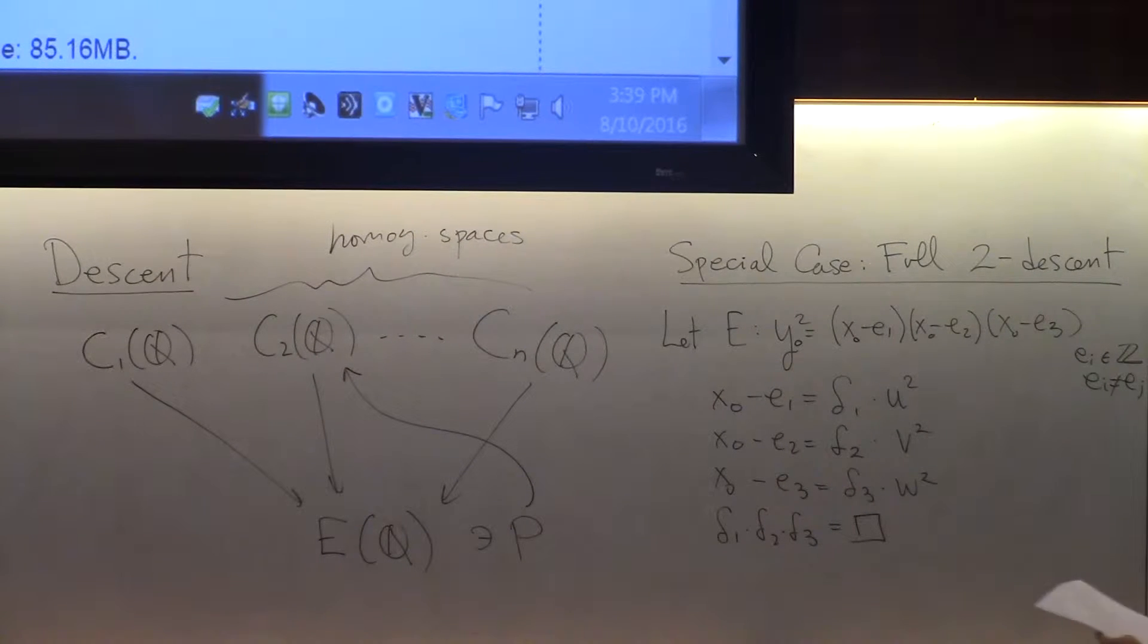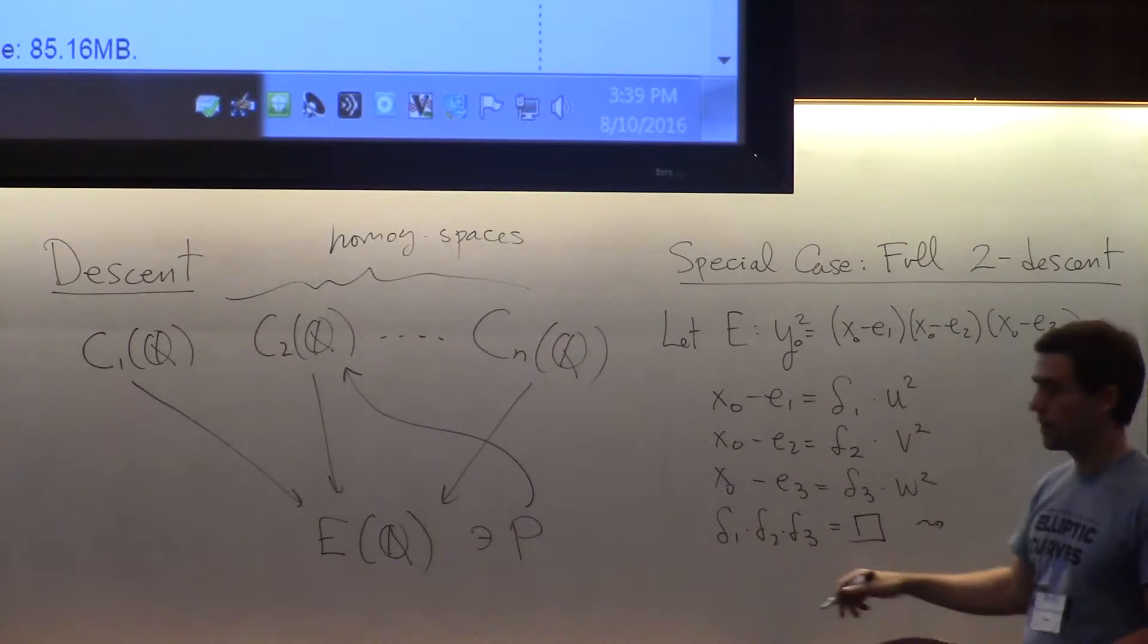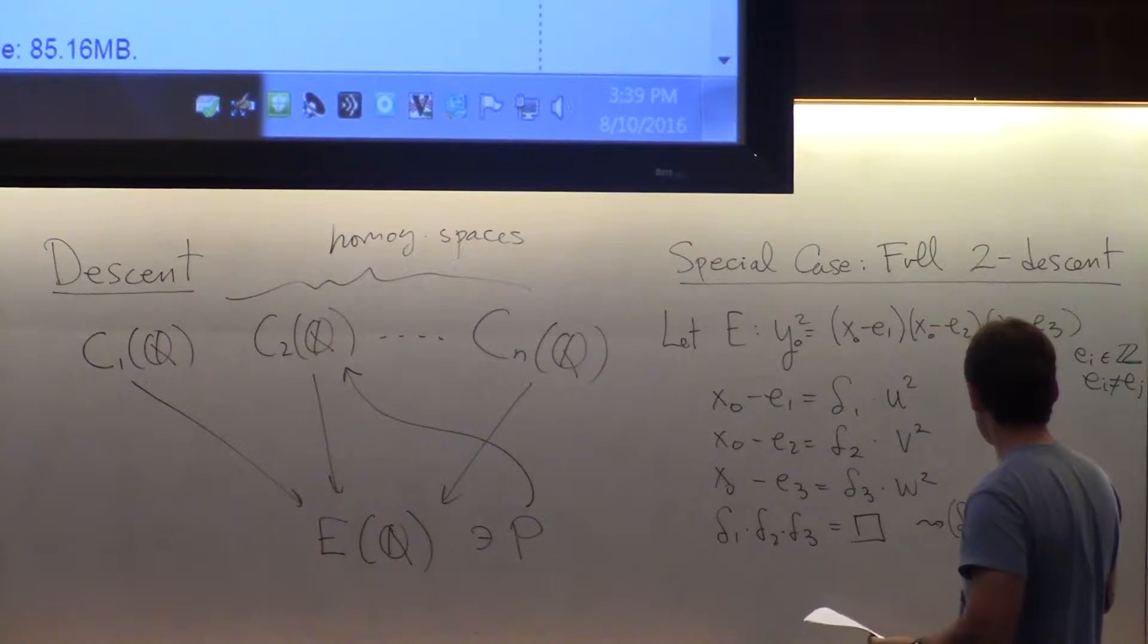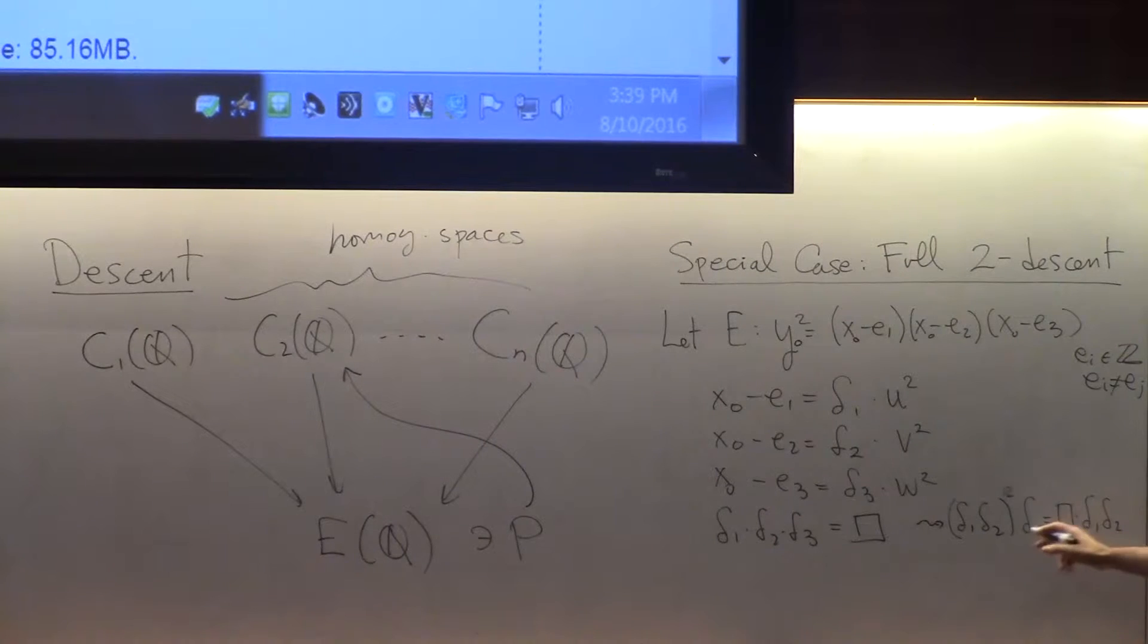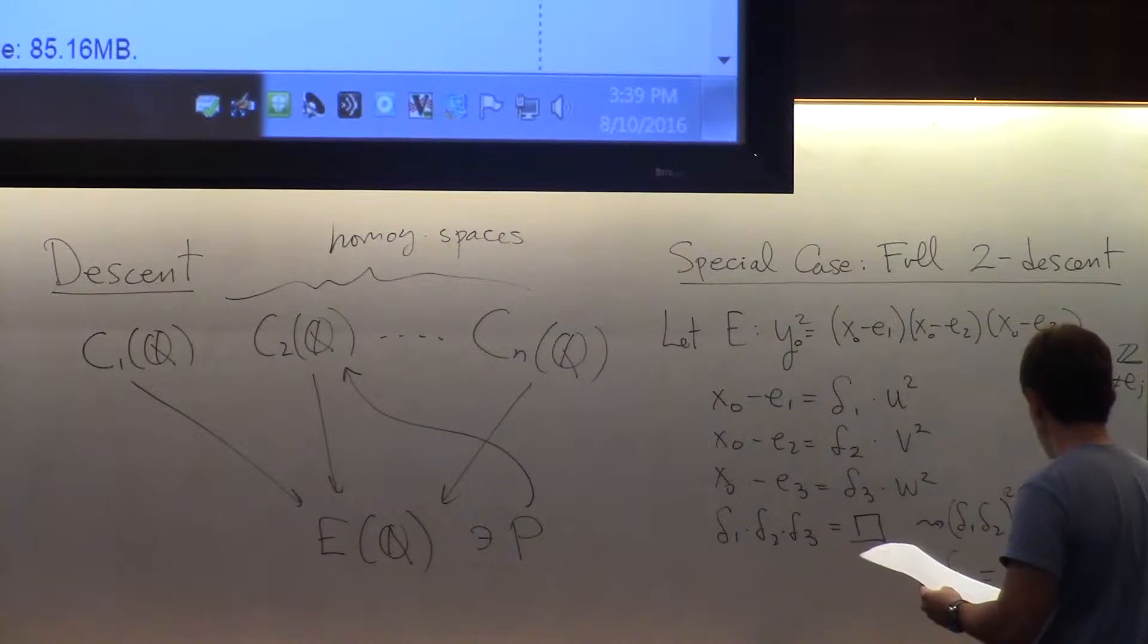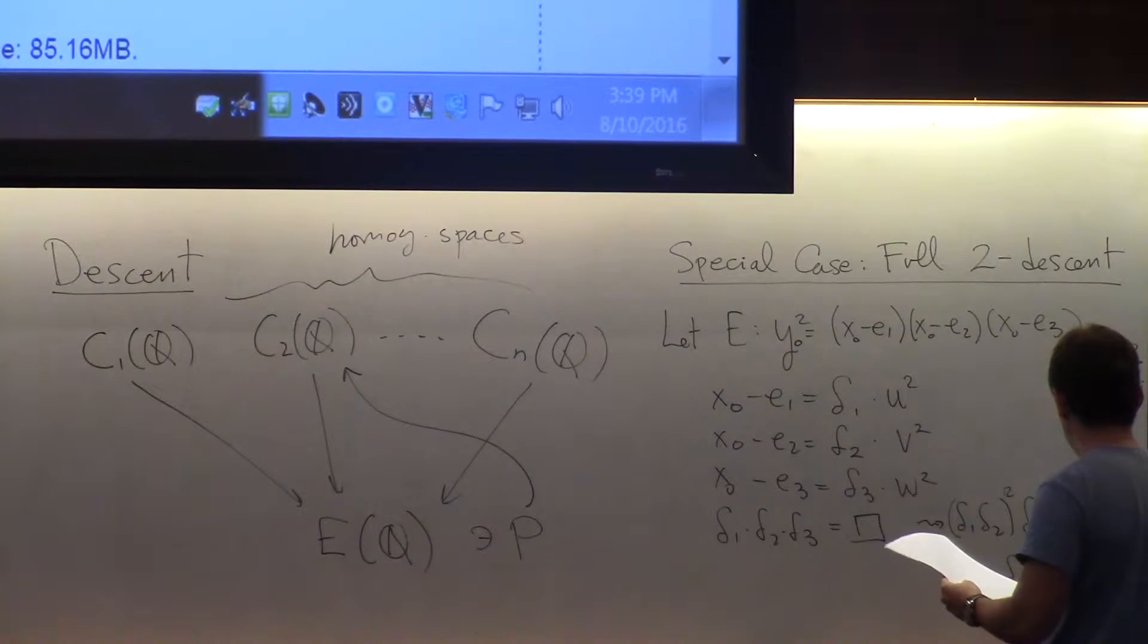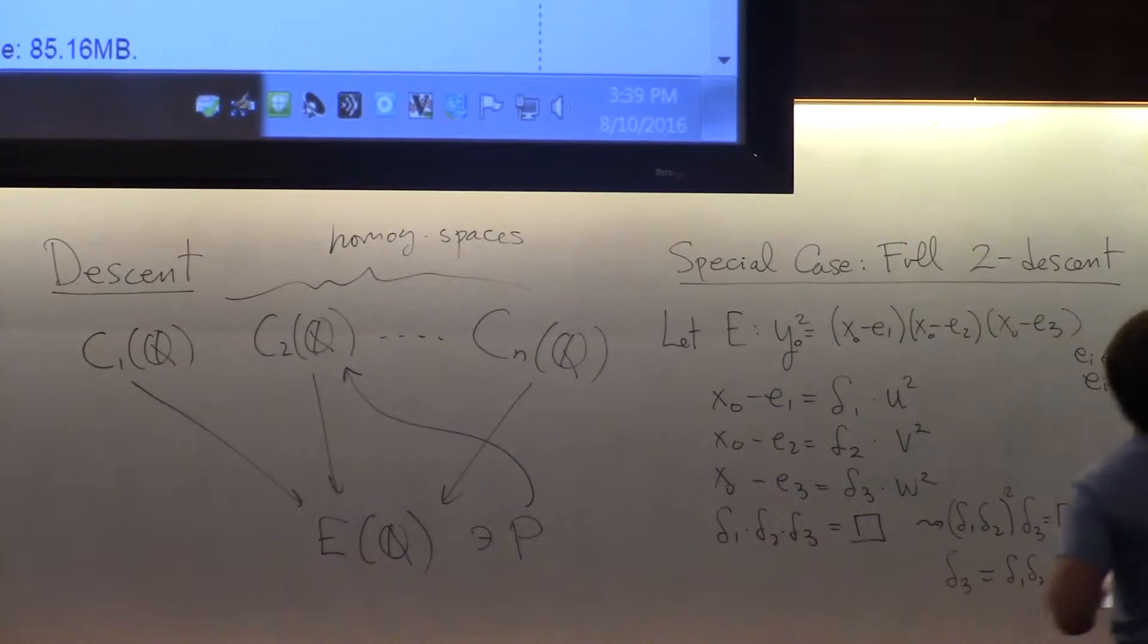So let's see where that goes. So this should be the square-free part times a square. And what I need is that all three multiply to be a square. If that's the case, let's multiply this equation both sides by delta-1, delta-2. I want to eliminate one of the deltas. So if I multiply both sides by delta-1, delta-2, I get a square there. That's good. And a square times delta-1, delta-2. So what that says is that modulo squares, delta-3 is delta-1 times delta-2. Or in other words, delta-3 is delta-1, delta-2 times the square divided by delta-1, delta-2 square.